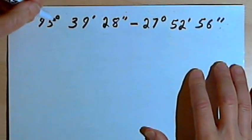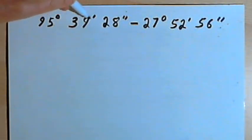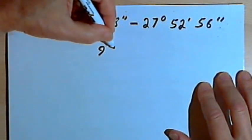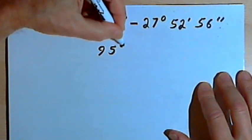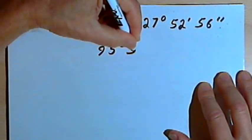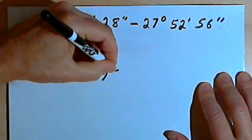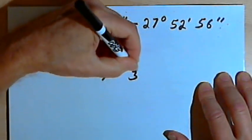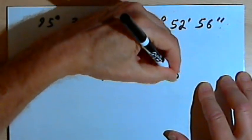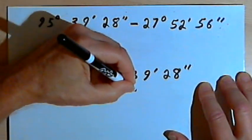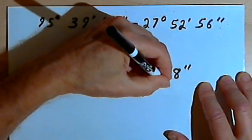Now let's try a subtraction problem. I have 95 degrees, 39 minutes, 28 seconds, and I want to subtract 27 degrees, 52 minutes, 56 seconds. I line the two angles up with degrees, minutes, and seconds aligned one under the other, and I'll need some room above the top row for borrowing.